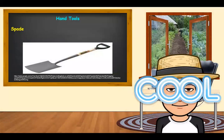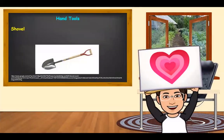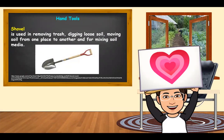Next hand tool is what we call the spade. A spade is normally used for removing trash or soil, digging canals or ditches, and mixing soil media. The next hand tool is the shovel. A shovel is used in removing trash, digging loose soil, moving soil from one place to another, and for mixing soil media.